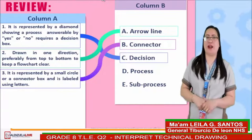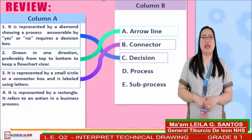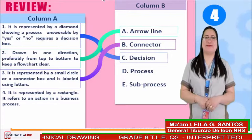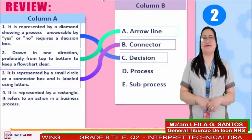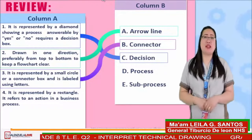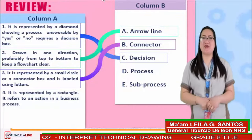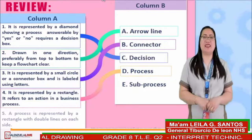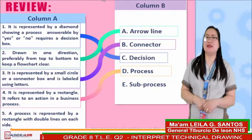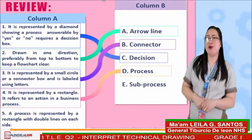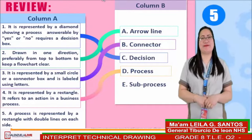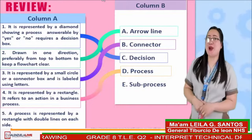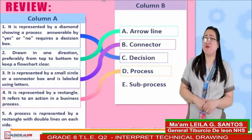Next is the answer for number 4: It is represented by a rectangle. It refers to an action in a business process. Time's up! The correct answer is letter D, process. How about number 5? This is a process represented by a rectangle with bubble lines on each side. Time's up! If your answer is letter E — terrific! Your answer is correct!